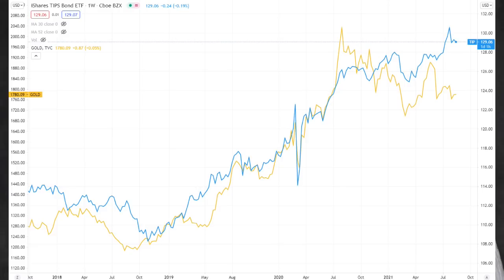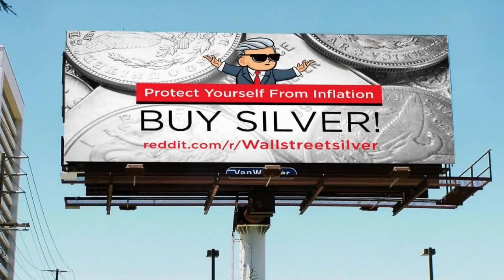Now, TIPS are government bonds whose face value rises with inflation. So, what's going on here? Well, firstly, we must distinguish between physical gold and paper gold. The demand for physical gold and silver has been extraordinarily high, as we all know.